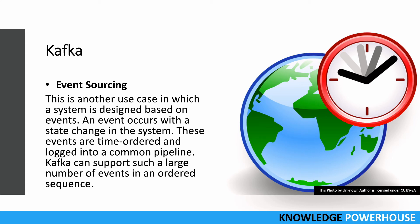Another use case is event sourcing. In systems like LinkedIn, many events occur — connecting with somebody, adding a connection — and these events represent a state change in the system. You want to process these events in the right order, so they are time-ordered and sequential. These events are sent to Kafka, which maintains the ordering sequence. Once they are in a common pipeline, downstream subscribers can start processing them. If there is a failure downstream, they can re-read from the point of failure. This way, a large number of sequential events can be processed using Kafka.